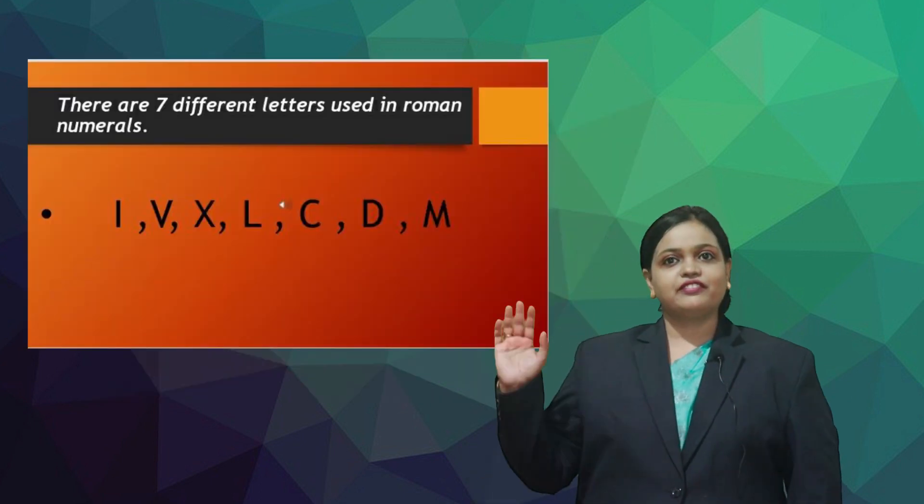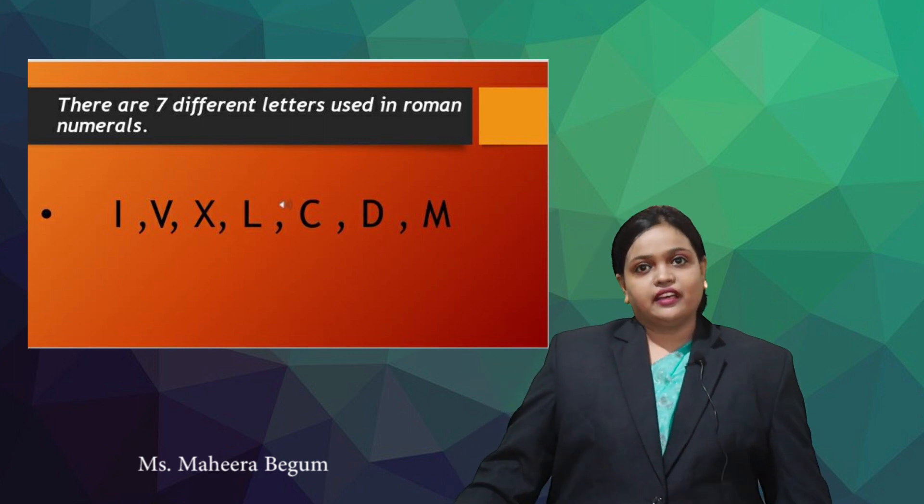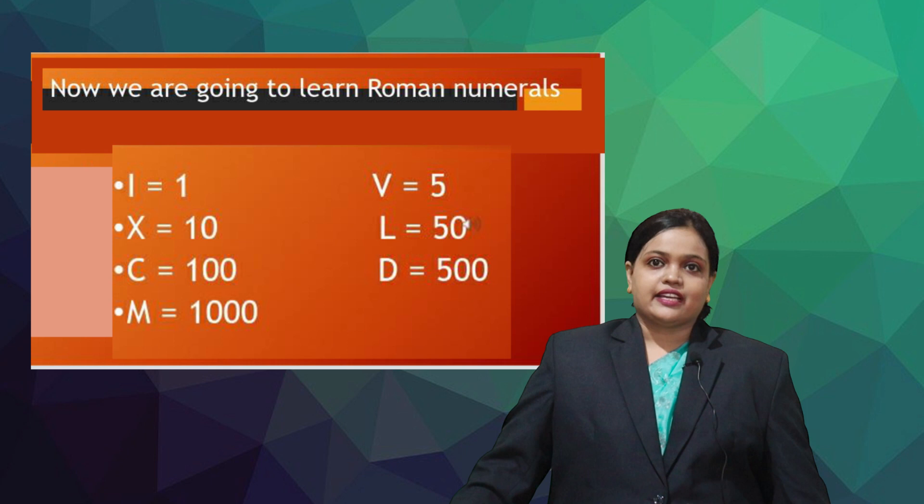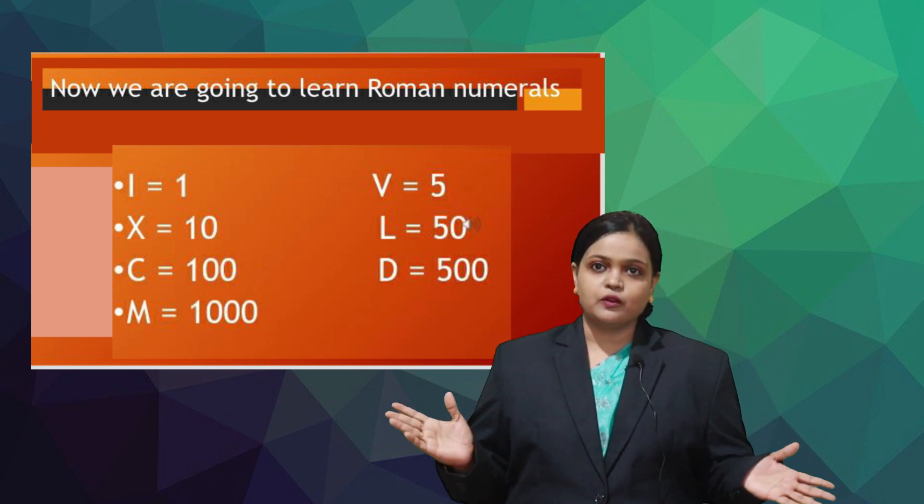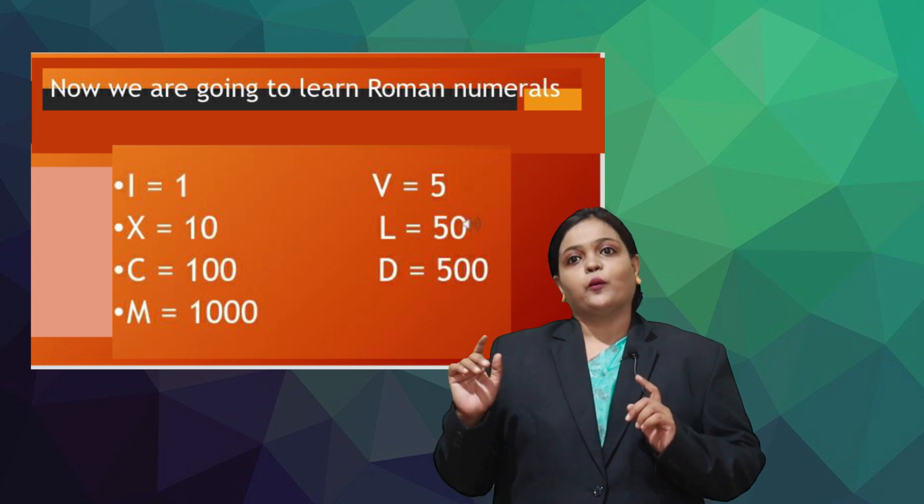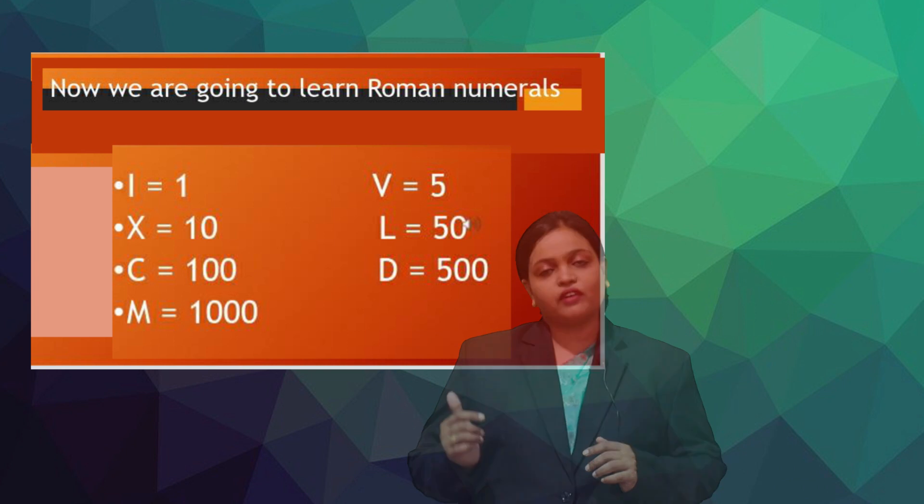Seven different letters used in Roman numerals. Letter I is 1, X is 10, C is 100, M is 1000 and V is 5, L is 50 and D is 500.